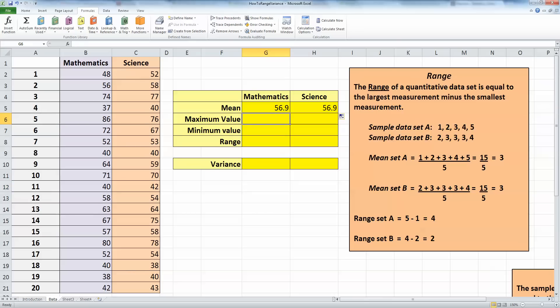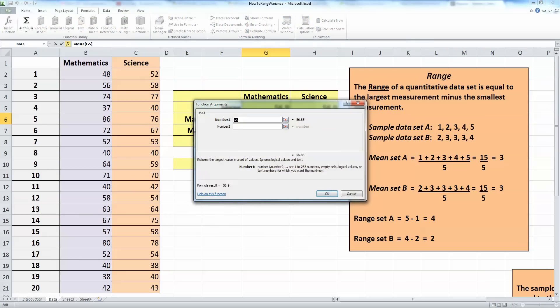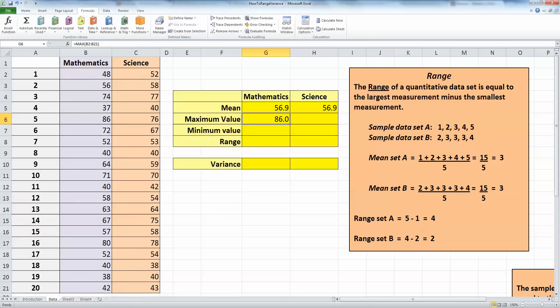So for the maximum value in the mathematics test, I'm going to use the formulas ribbon again. More functions, statistical and scroll down to M for the maximum value. Select my data range with my mouse and click OK. So if I examine in time, I find that the maximum value in the mathematics test is 86. And with the autofill tool, I can see what the maximum value is for the science test by just clicking and dragging the formula over there.